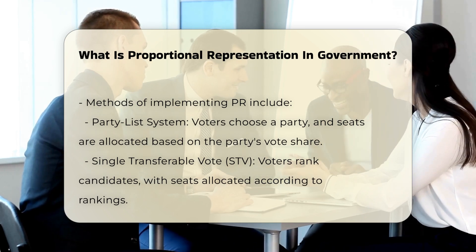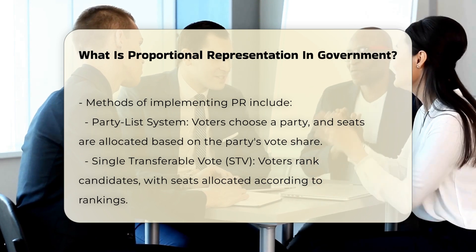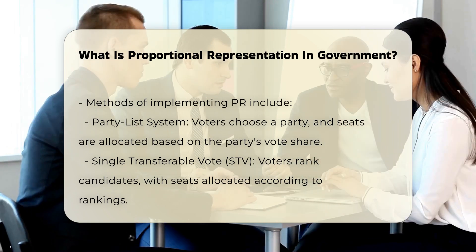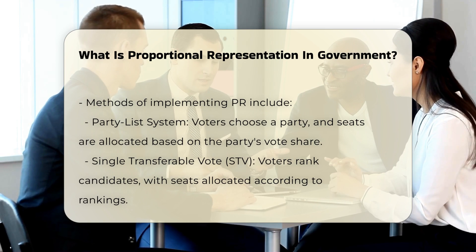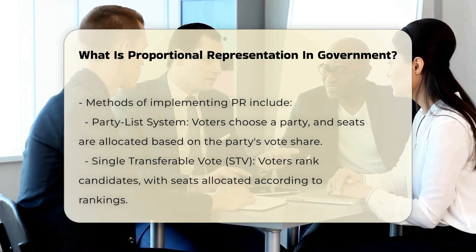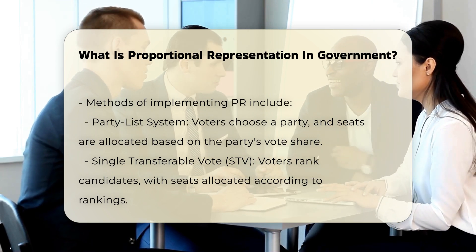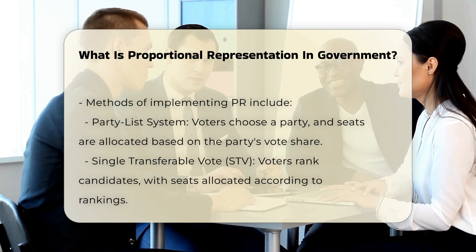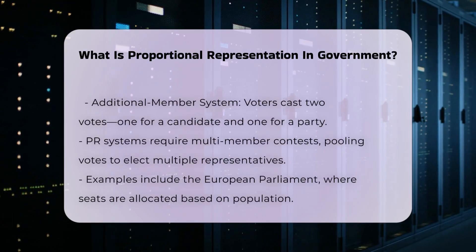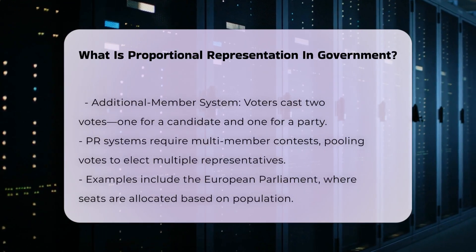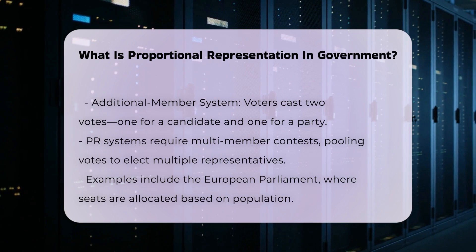Single Transferable Vote: Voters rank their preferred candidates, and seats are allocated based on the ranking. This system is used in countries like Ireland and Malta. Additional Member System: Voters cast two votes, one for a candidate and one for a party. This system combines elements of both single-member and proportional representation systems.